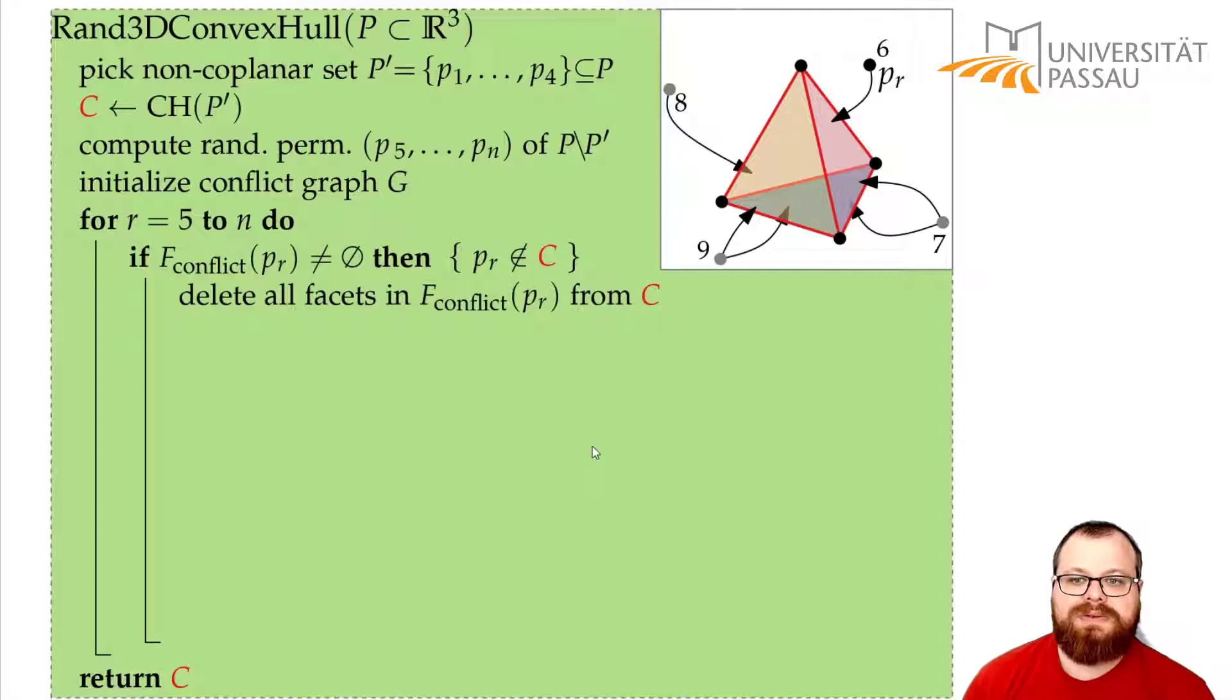So first, we delete all the faces in the conflict graph from the convex hull. So this one disappears. The face is still in the conflict graph. So these two points still have a conflict with the face that doesn't exist anymore, but we still need these edges in the next few steps.